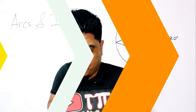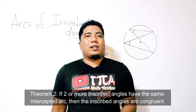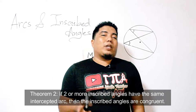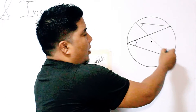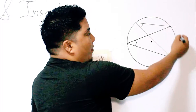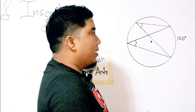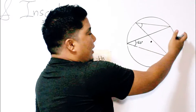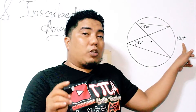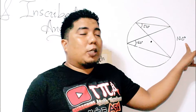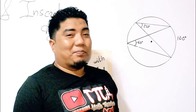Theorem number two states that given two inscribed angles that intercept the same arc, then the two inscribed angles are congruent. For example, if the intercepted arc is 100 degrees, then each inscribed angle is 50 degrees. Both inscribed angles equal 50 degrees because the inscribed angle is half the measurement of its intercepted arc.